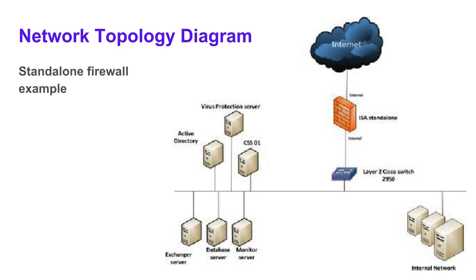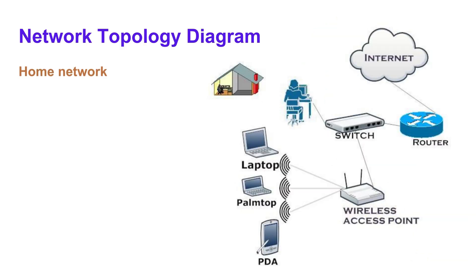This is a network topology diagram showing a scenario where a standalone firewall is used in a local area network. The lines indicate how the network connects the different computers and components. Another network topology example shows a home network — you don't need to spend a lot of time drawing detailed images; you can use abstract shapes and label them correctly. However, connecting components using the proper notation, such as Wi-Fi or wired, is important.